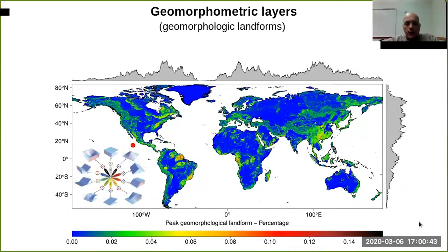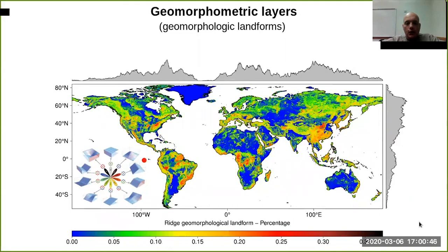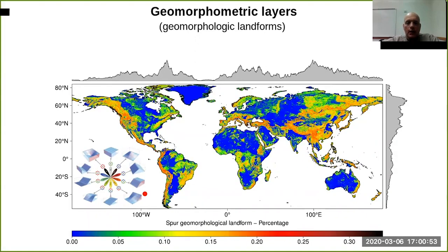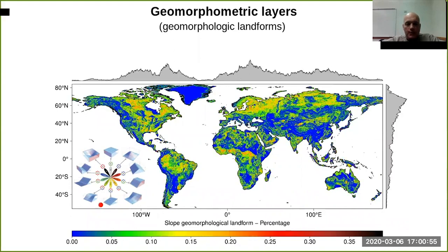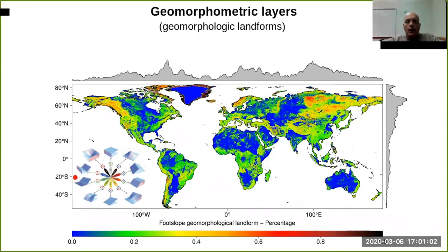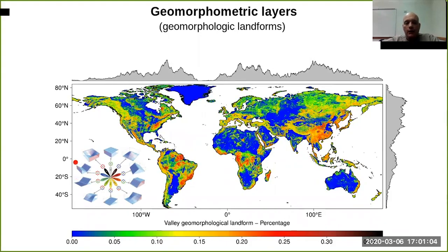These are the so-called geomorphological landforms that were mentioned before. You can see maps where each single feature — peaks, ridges, and so on — is calculated as a percentage of the value, i.e., how many you have in the pixel.